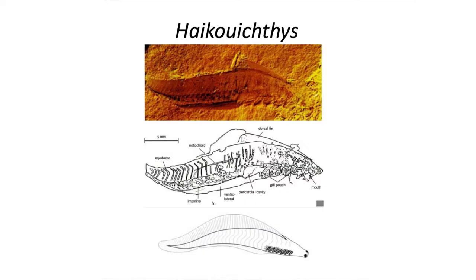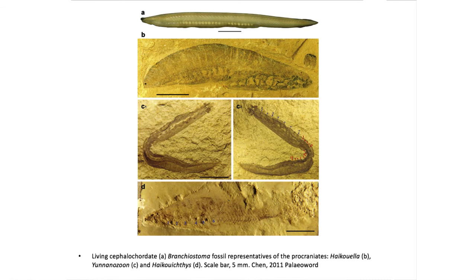In addition to these fossil euchordates, there are a series of interesting animals that appear to resemble Owen's archetype of vertebrates, which includes Haiku Ichthes, which exhibits segmented muscles, a notochord, gills, and a slender dorsal fin. Unlike modern amphioxus, the notochord does not extend to the tip of the head, so this creature is placed within the formal grouping Chordata.